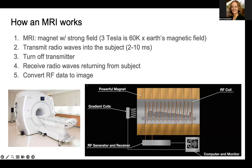An MRI is basically a very strong magnet — usually MRIs are three Tesla, which is about 60,000 times the Earth's magnetic field. This magnet is always on, and it aligns all of the protons in the water molecules in your body in a specific direction. So when you're put into an MRI scanner and wheeled inside, there's an inherent magnetic field that aligns all of those protons in the water in your body in a specific direction.